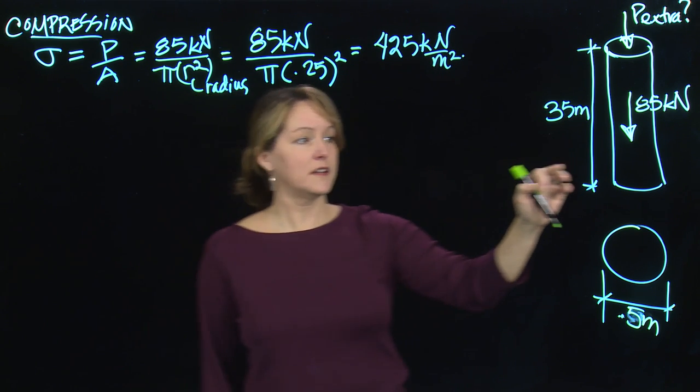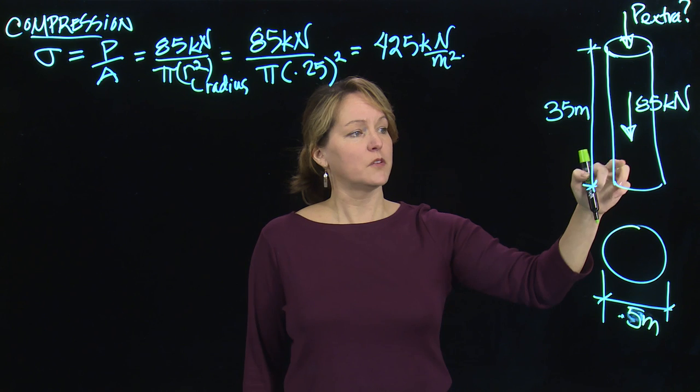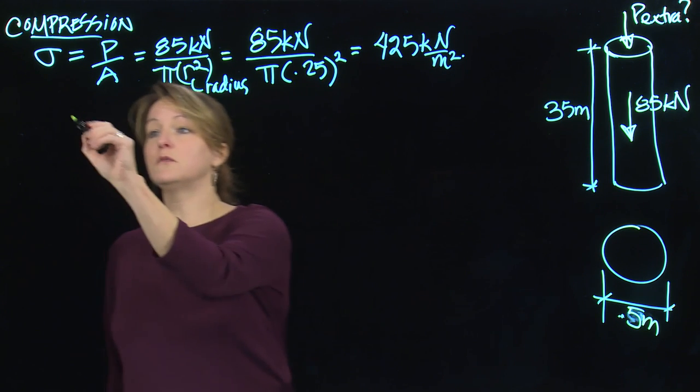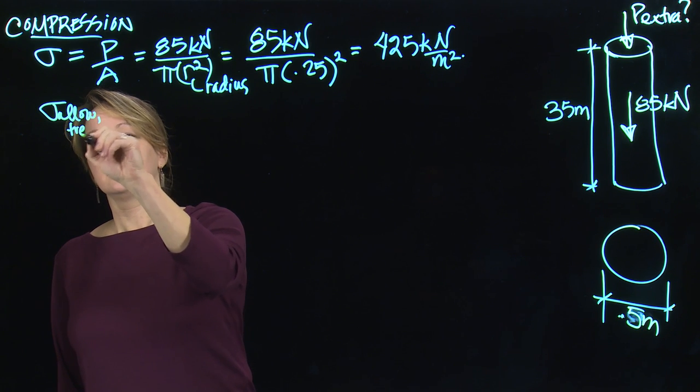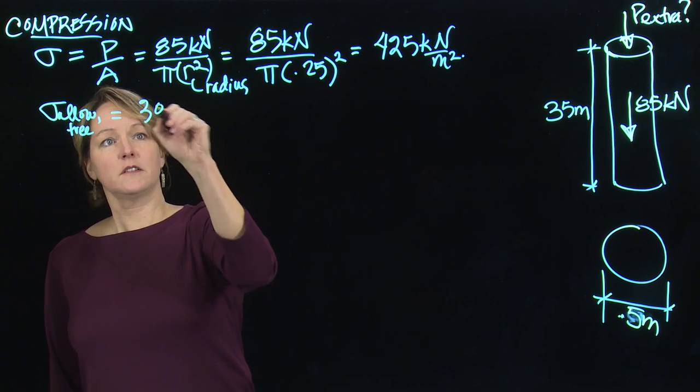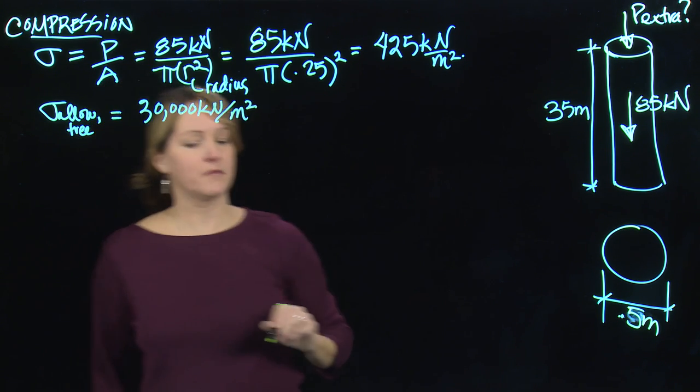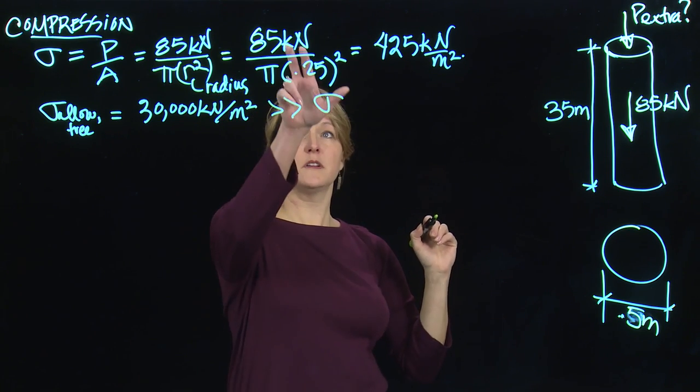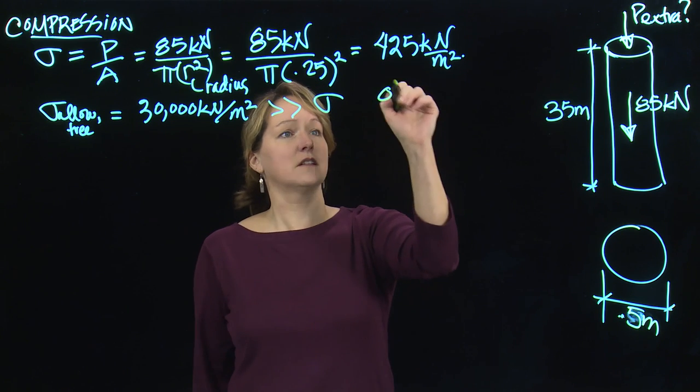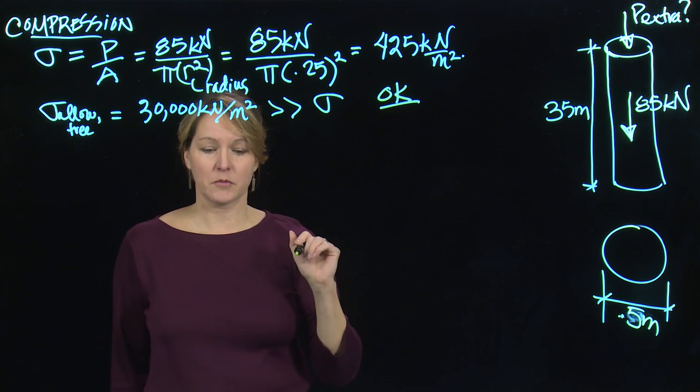I also need to know the allowable stress of this tree, of this wood. We went out and tested Owl's tree. The allowable stress for the wood for his tree is 30,000 kilonewtons per meter squared, which is much greater than the stress that's applied with the 85. So we're OK in compression. I'm not worried about Owl's tree in compression.